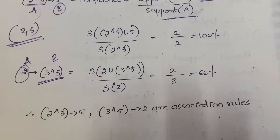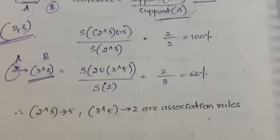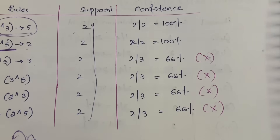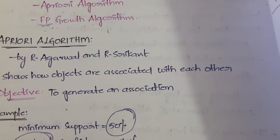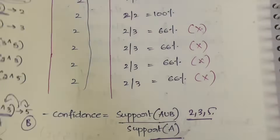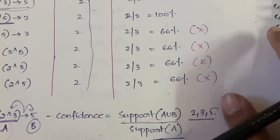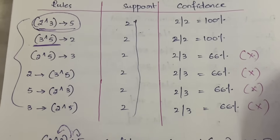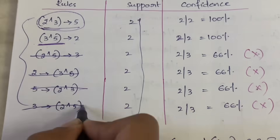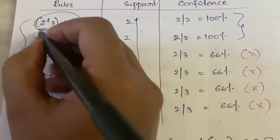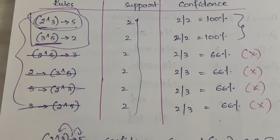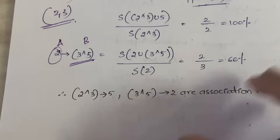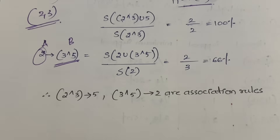After calculating the confidence for all six rules, we compare against the threshold confidence of 70%. Rules below 70% are eliminated. Only two association rules meet the threshold and are considered strong: (2,3)→5 with 100% confidence and (3,5)→2 with 100% confidence. These are the final strong association rules from the Apriori algorithm.